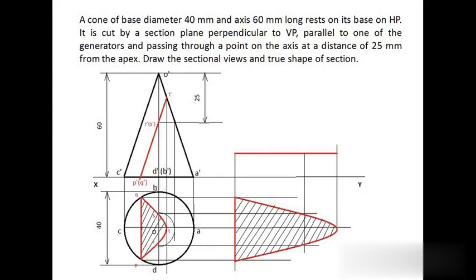Draw the front and top views of the cone, dividing the circle into four equal points OA, OB, OC, OD and marking their front views A dash, B dash, C dash, D dash, and apex O dash. Measure 25 mm from the apex to locate the point on the axis. Through this point, draw the section plane parallel to generator O dash C dash, giving the trace T dash to P dash. On generator O dash A dash there is one cut point T dash; at mid-position on generators O dash D dash and O dash B dash there are cut points R dash and S dash; at the base the section plane cuts at P dash (front) and Q dash (back).